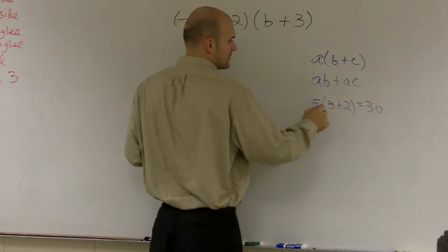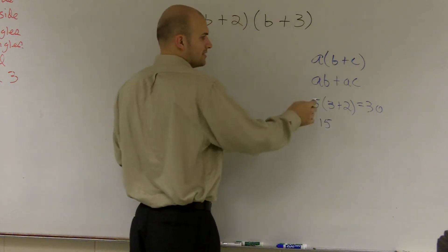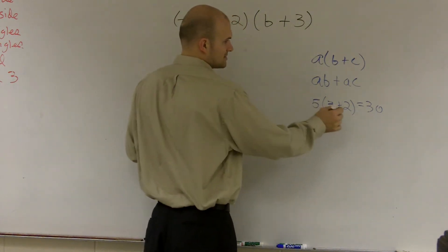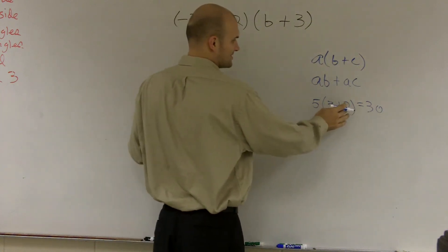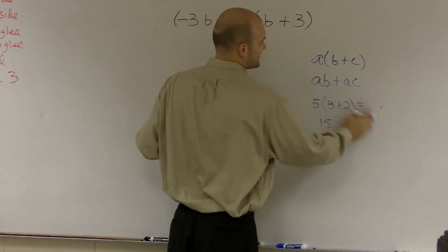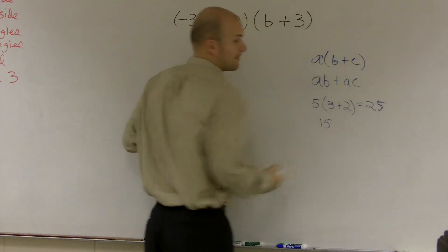Well, that's the same thing as if we did 5 times 3, which would be 15, and then 6, 30. 5 plus 2 is 5, right? My bad.